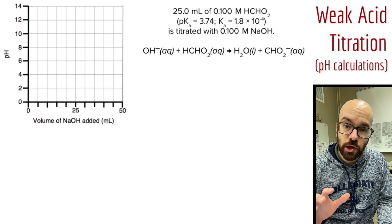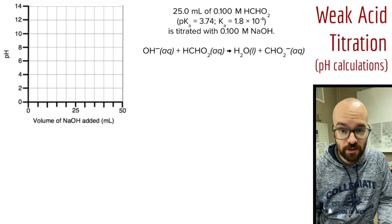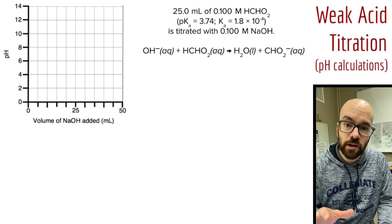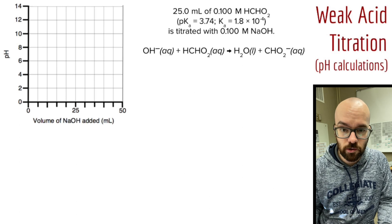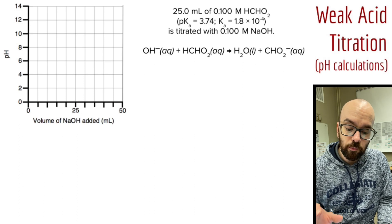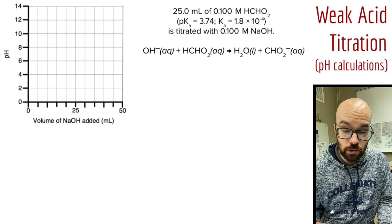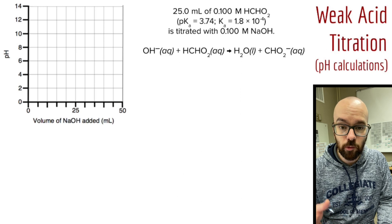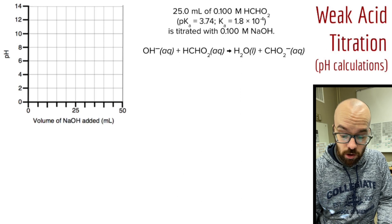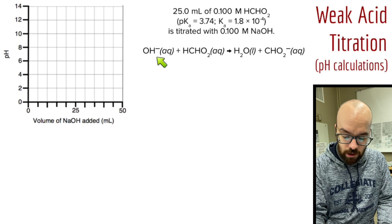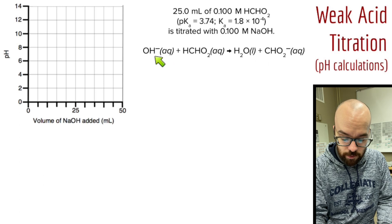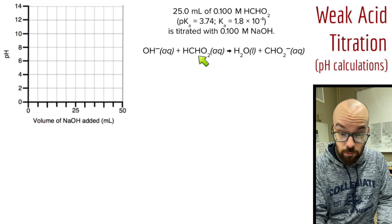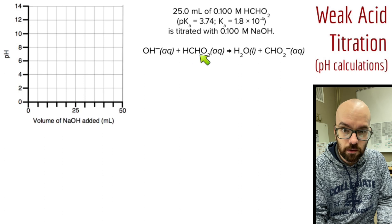Hey everyone, in this video we're looking at pH calculations for a weak acid titration. I already did a video on a strong acid-strong base titration. The only difference here is we're using a weak acid that we're titrating instead of a strong acid. The prompt says we have 25 milliliters of 0.1 molar HCHO₂, which is formic acid. It gives us the pKa and Ka information, and it's titrated with 0.1 molar sodium hydroxide, which of course is a strong base.